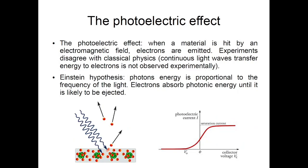Then a second experiment appeared that was even more puzzling and this is the photoelectric effect. The photoelectric effect is actually simple to explain. If you have a material and you hit this material with an electromagnetic field, electrons are going to be emitted from this material. So electromagnetic fields are injected and electrons are emitted out of the material.